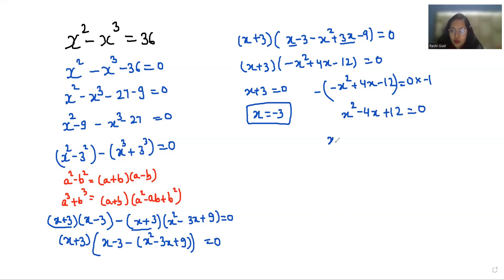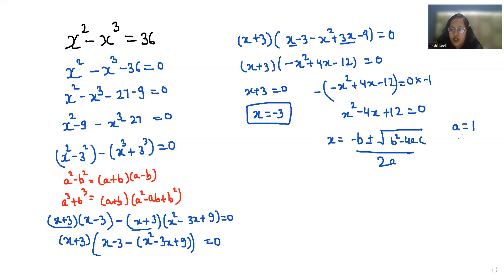I'm going to use the quadratic formula: x equals negative b plus or minus under root b squared minus 4ac, divided by 2a, where a is the coefficient of x squared, b is the coefficient of x, and c is the constant term.